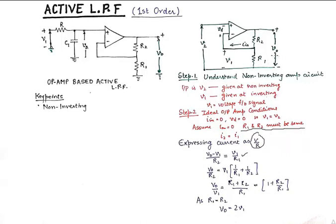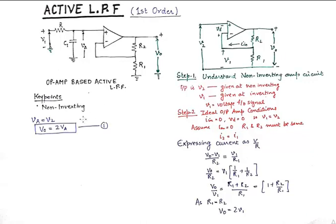Now once we get to this point that V0 is equal to twice of V1 after meeting these conditions we talk in context with the actual filter. That would mean that V2 in our case over here is VA. So please understand this point that in our case in the low pass filter V2 of this non-inverting amp circuit is VA and we know that V0 is twice of VA from this equation.